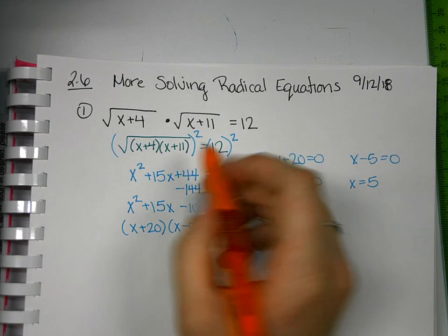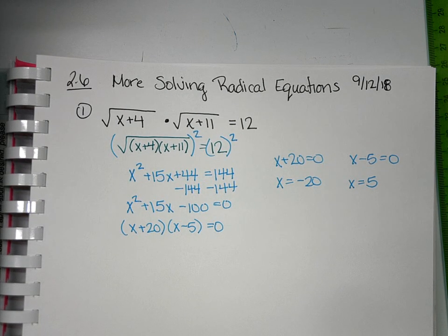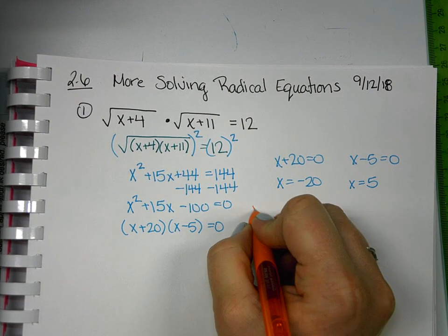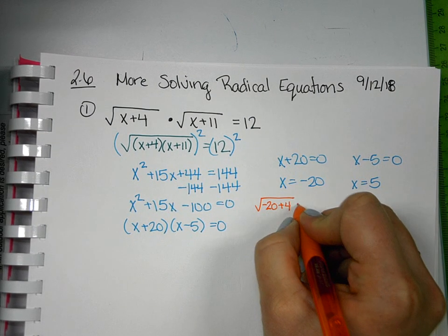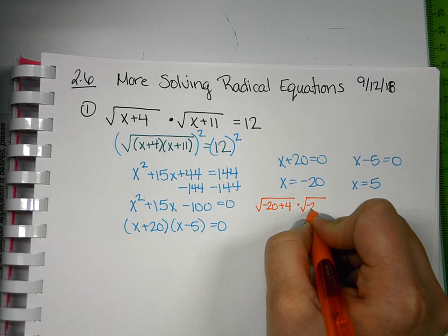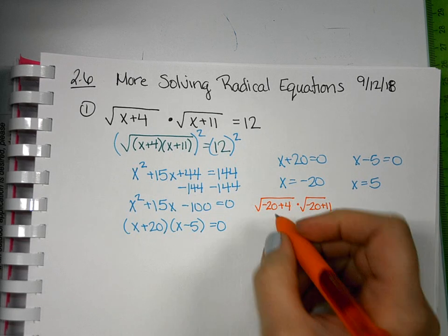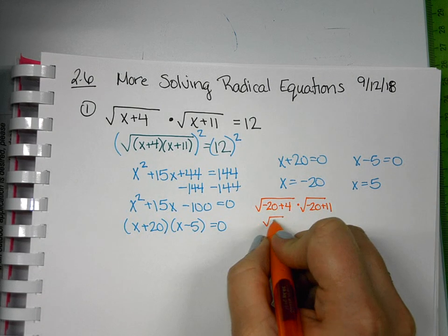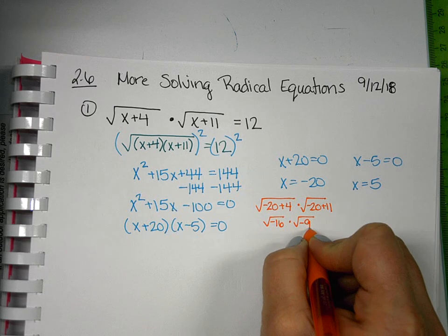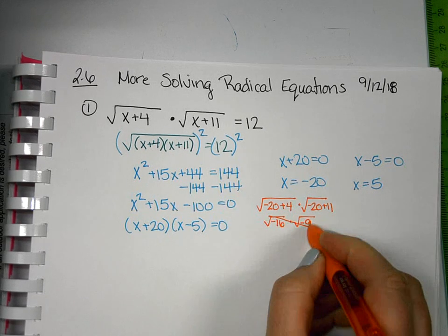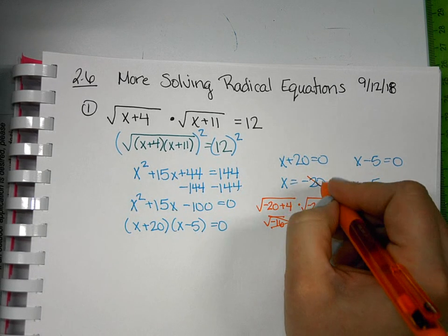I'm always going to go back to the original problem before we've manipulated anything. If we go back to the original problem, I'll have negative 20 plus 4 times negative 20 plus 11, checking to see does that reduce to 12. Here I'll get square root of negative 16 times the square root of negative 9. I can't have square roots of negatives, so I know that negative 20 could not be a solution.